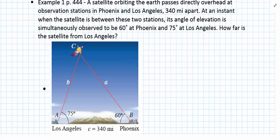In example 1 on page 444, we're told that a satellite orbiting the Earth passes directly overhead at observation stations in Phoenix and Los Angeles. Those two cities are 340 miles apart.